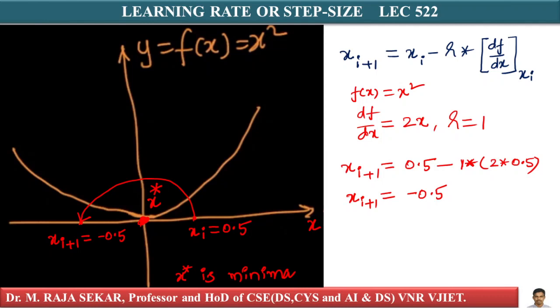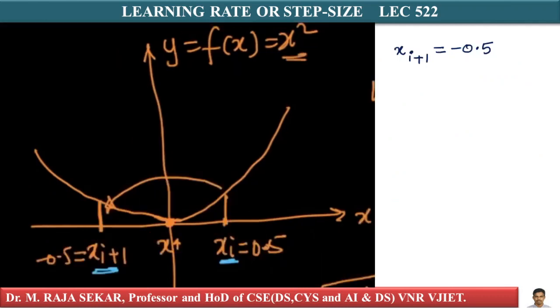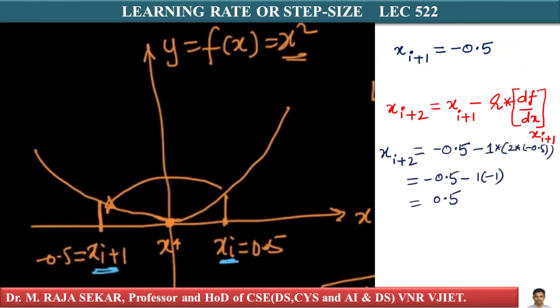Now there is one more problem. What happened to xi+2? xi+2 = xi+1 - r·(df/dx) at xi+1. Therefore, your xi+2 value is 0.5. If my xi+2 is 0.5, my xi+3 will be -0.5. Basically, it is oscillating between +0.5 and -0.5.